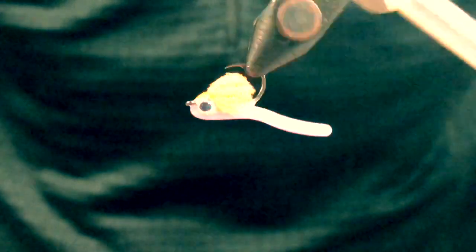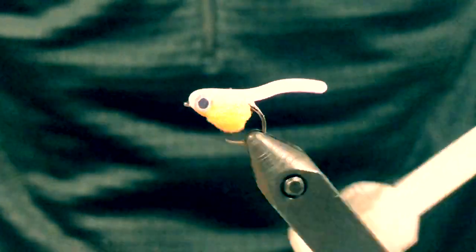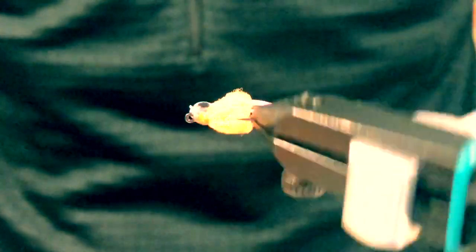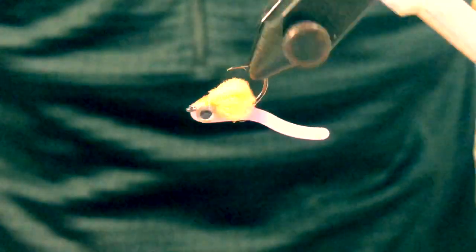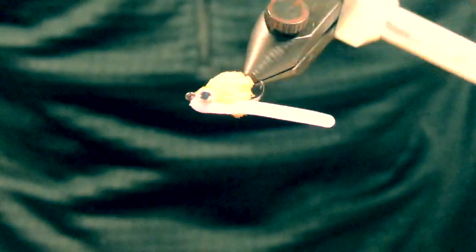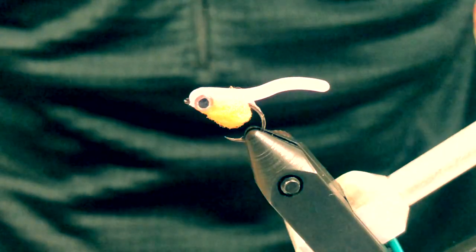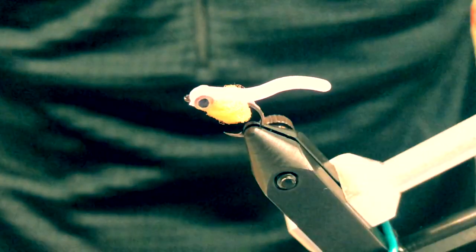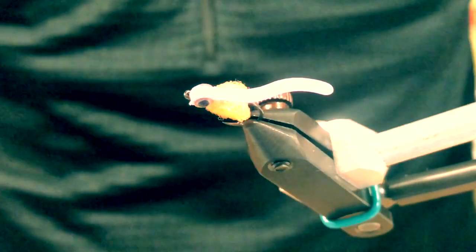This is the squirmy alevin, which is basically a very young king salmon. The eggs that were laid last fall are now starting to hatch, and this is kind of what they look like when they come out of the egg—just a simple little body with a yolk sac.